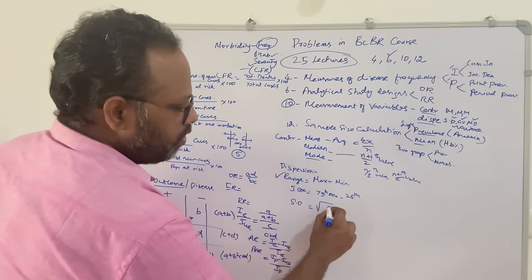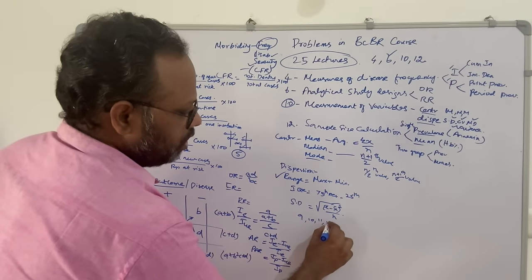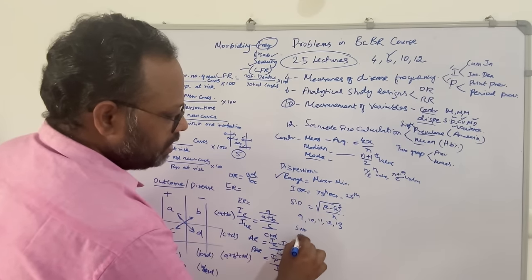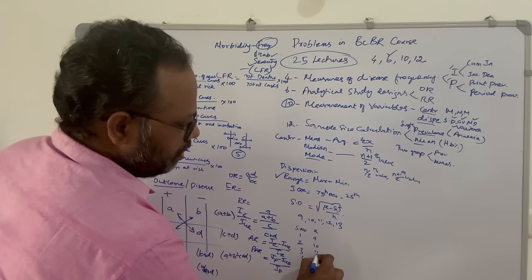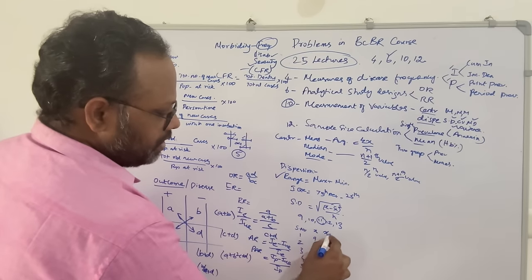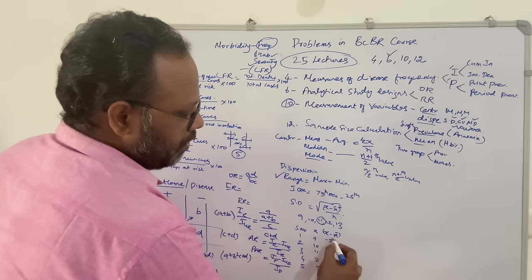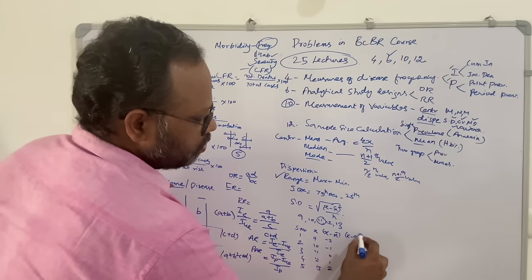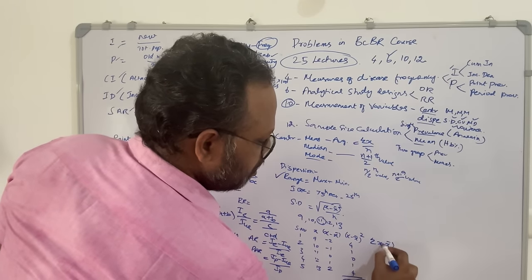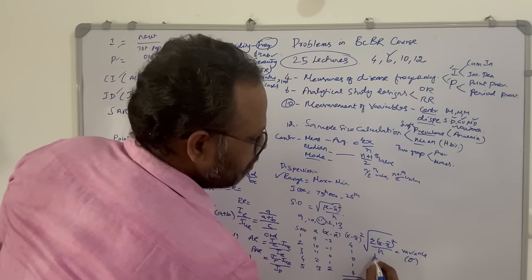Standard deviation is given by the formula: square root of [Σ(x − x̄)² / n]. For example, with hemoglobin values 9, 10, 11, 12, 13 — the mean x̄ is 11. Calculate x − x̄: you get −2, −1, 0, 1, 2. Then square each: 4, 1, 0, 1, 4. Sum these values to get Σ(x − x̄)². Divide by n — that gives the variance. Taking the square root of the variance gives the standard deviation.